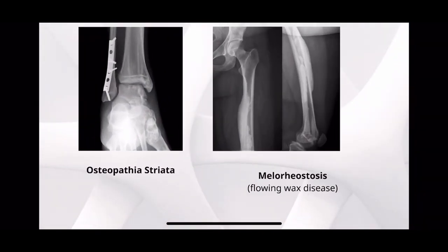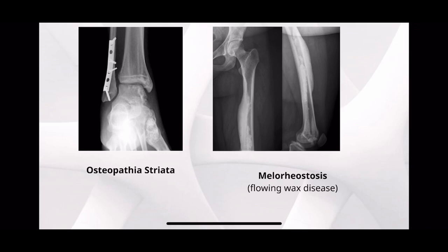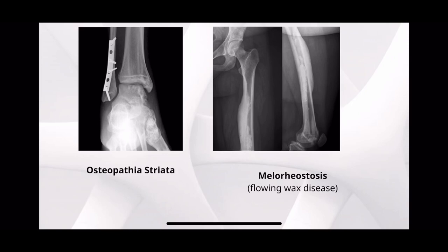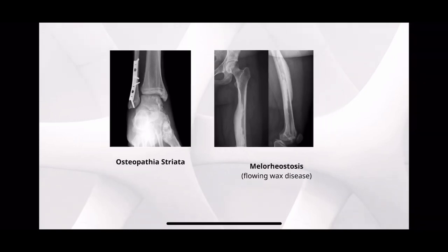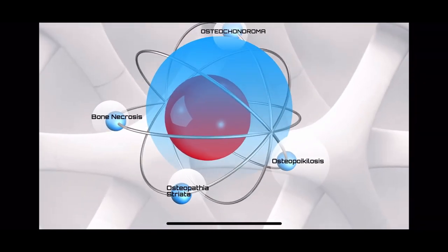In osteopathia striata, you see striations. In melorheostosis, you see flowing wax-like lesions. These are dysplasias or storage disorders.